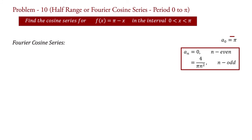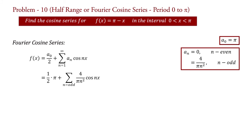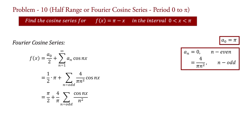Substituting these values of a₀ and aₙ into the Fourier series f(x) equal to a₀ by 2 plus summation n equal to 1 to infinity aₙ cos(nx): we get f(x) equal to pi upon 2 plus summation over odd n of 4 upon pi·n² cos(nx), since aₙ equals 0 for even n. Taking 4 upon pi outside, we get f(x) equal to pi upon 2 plus 4 upon pi into summation over odd n of cos(nx) upon n².